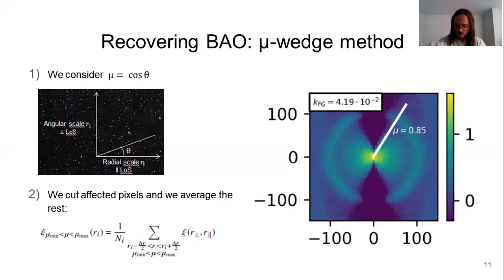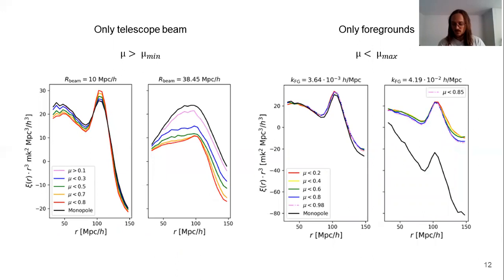Here we show some results. On the left figure, we focus only on the telescope beam. As you can see on the left, with a mild value of R beam, if the mu cut is more severe, then the BAO is more pronounced. And in the right, considering a strong value of R beam,